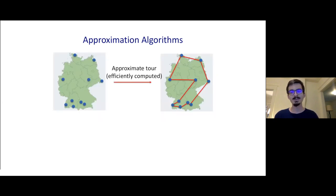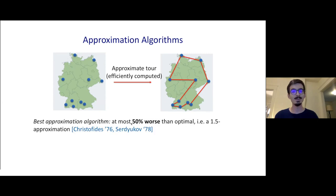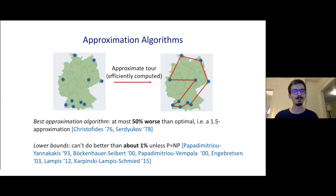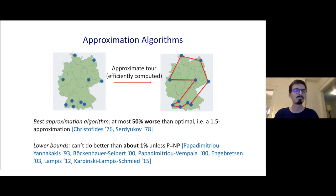For TSP, the best approximation algorithm has been a 1.5 approximation, meaning it always returns a tour at most 50% longer than the optimal one. This is from the 70s and it's known as Christofides' algorithm. On the other hand, we know that unless P equals NP, we can't find algorithms that get within about 1% of optimal. So this problem is not very well understood, and we'd really like to know whether the true answer is closer to 50% or 1%. Both theoreticians and practitioners are interested in this question.